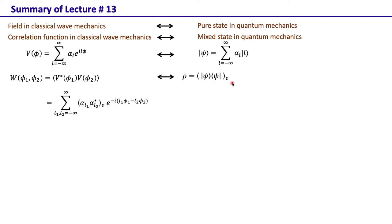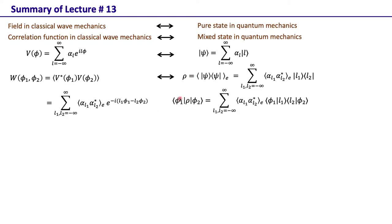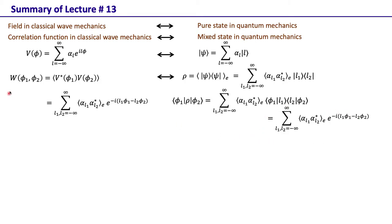The mixed state is represented as the ensemble average of the outer product |ψ⟩⟨ψ|. Using this representation for ψ, and taking the matrix element of the density matrix ρ, we see that it gives α_{l1} α*_{l2} with ensemble average, along with the angle representation of orbital angular momentum modes e^{-il₁φ₁}. So the density matrix element and the cross-correlation function are doing pretty much an analogous job.